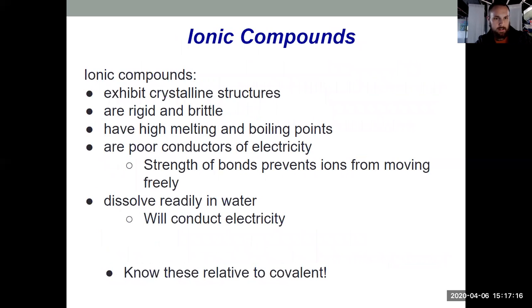So other properties of ionic compounds we should know. They typically exhibit crystalline structures. They tend to be more rigid and brittle, meaning you can easily break them. Think about like a large chunk of road salt, for example. They have very high melting and boiling points. And as I was just talking about those bonds holding electrons into place, ionic solids are poor conductors of electricity due to that bond strength. But we also know that we can dissolve a lot of salts in water, and then, because I don't have the bonds holding the electrons in place, a solution, an aqueous solution of an ionic compound does conduct electricity. So make sure you know those properties of ionic compounds relative to covalent compounds, which will be covered a couple slides from now.